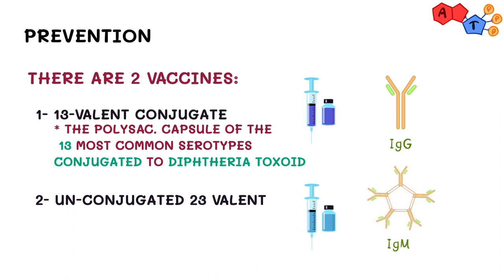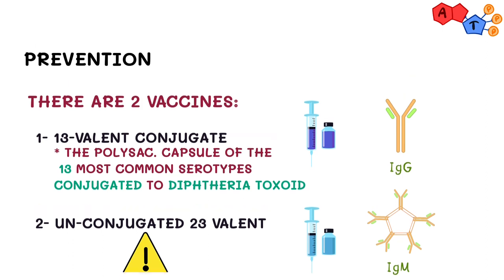However, a potential problem regarding the use of these pneumococcal vaccines is that they don't include all the serotypes, meaning that the vaccine will only reduce the incidence of the disease caused by the serotypes in the vaccine, but not the overall incidence of other serotypes that are not in the vaccine.